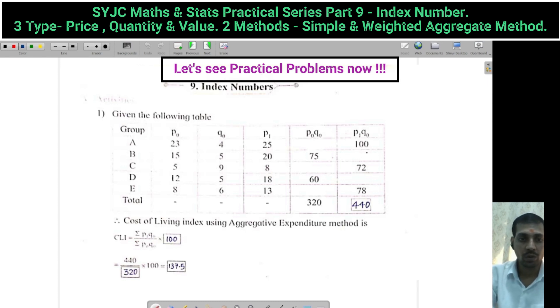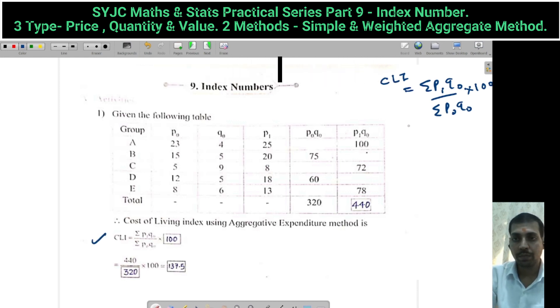What is cost of living index formula? Cost of living index: summation P1Q0 upon summation P0Q0 into 100. This is the cost of living index formula.